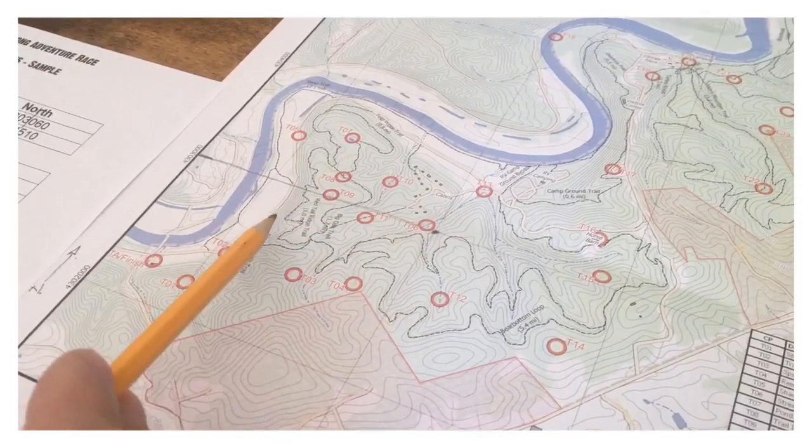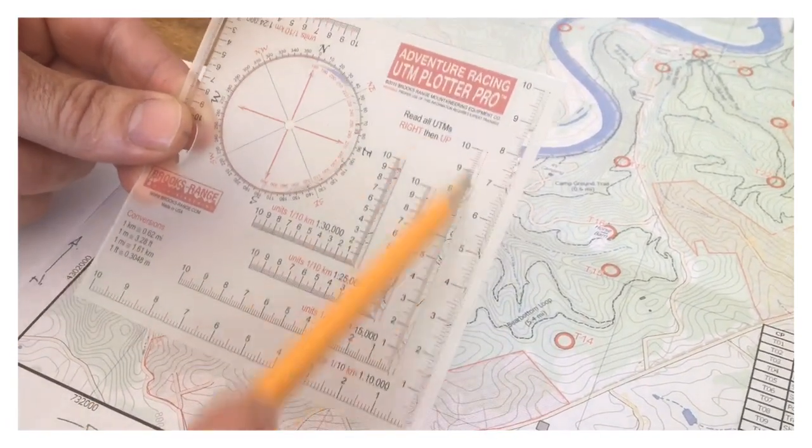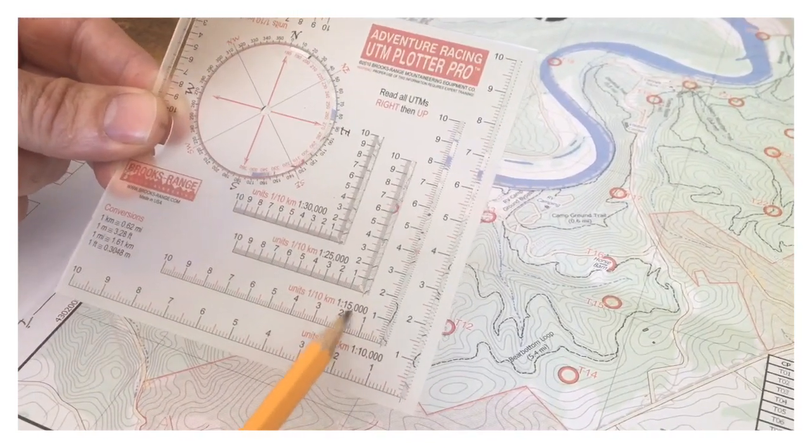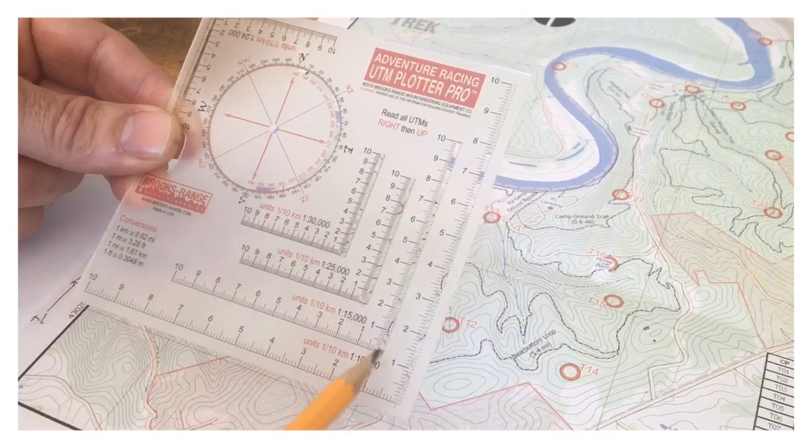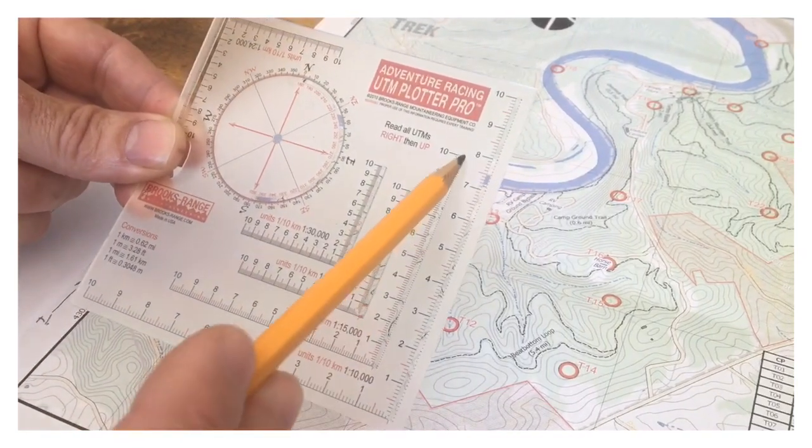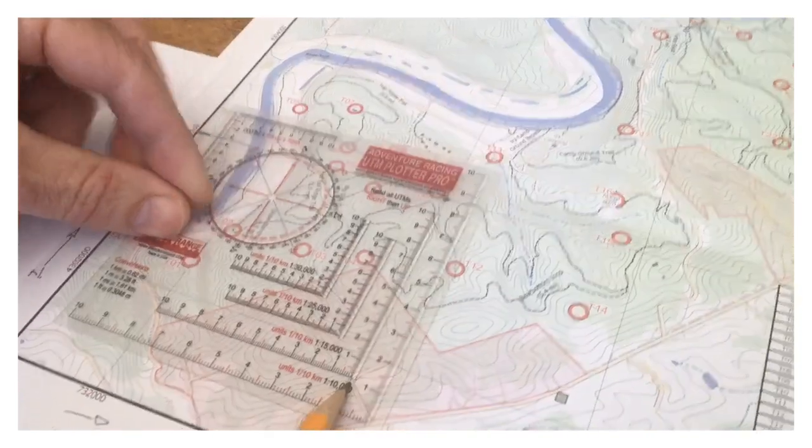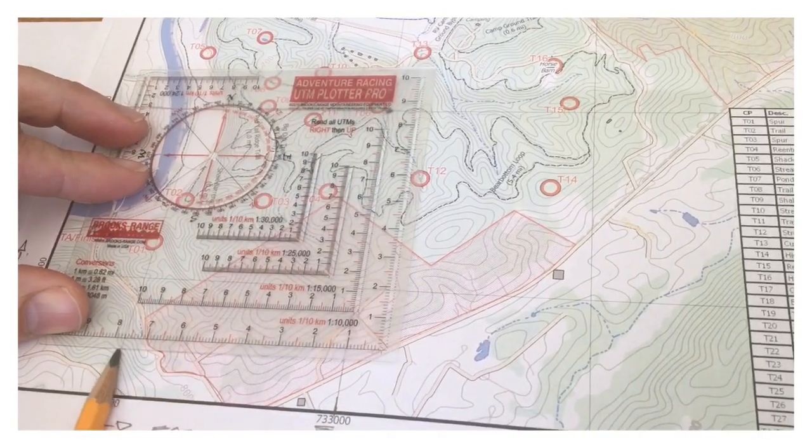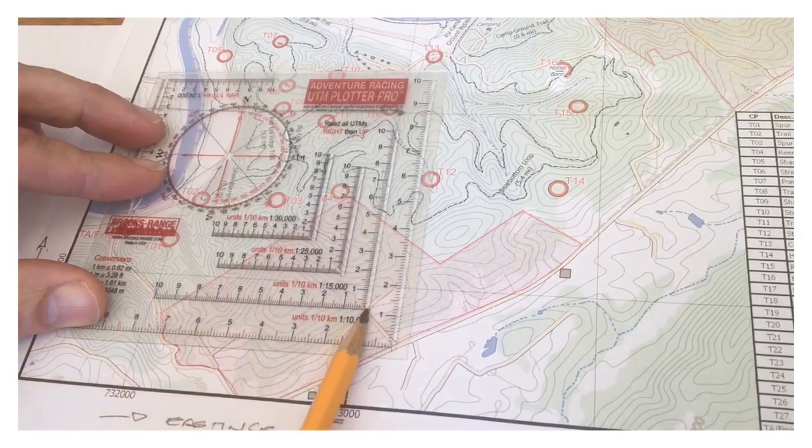The next thing I'm going to use is my handy dandy UTM plotting tool. These have lots of different scales on them. We're at 1 to 15,000. You can double check that using the right scale because this is my scale across for my Eastings, this is my scale up here for my Northings. If I lay that up against my map, you can see that covers exactly one square. From this coordinate here all the way across to here, it fills it in exactly.